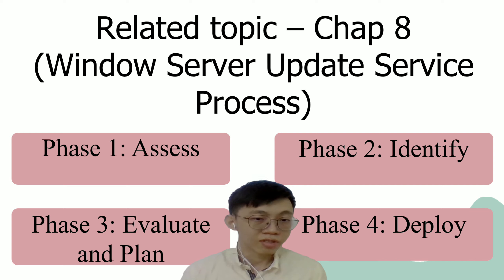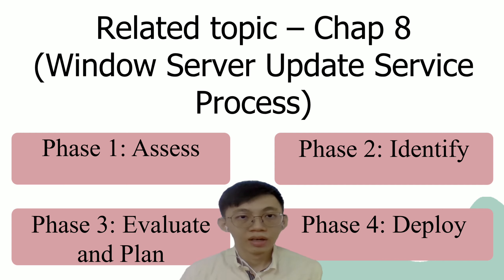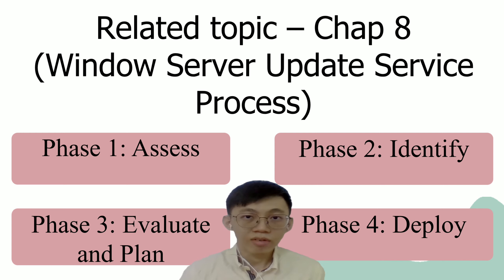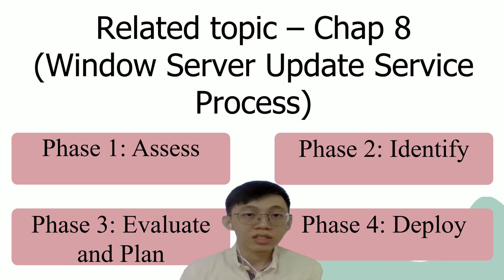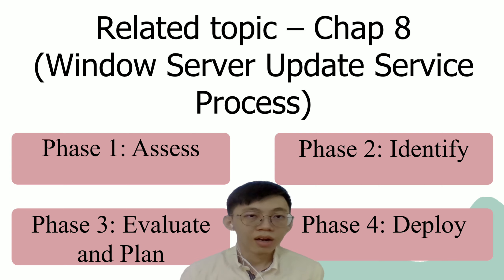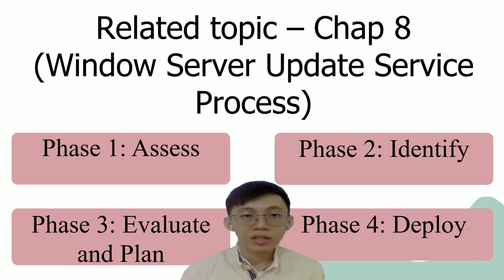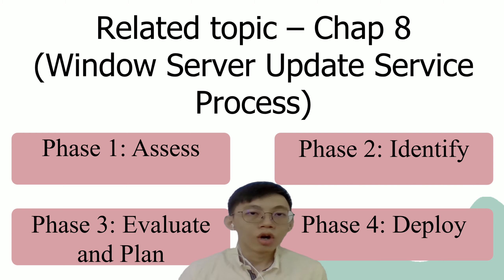Next is phase three, Evaluate and Plan: the Fujitsu team evaluates the update by running different types of testing in a test environment. The Fujitsu team has created and provided the government a set of well-written documents such as design specifications and procedure documents. This allows the government to obtain a better understanding of the new technology and develop knowledge through on-the-job training.